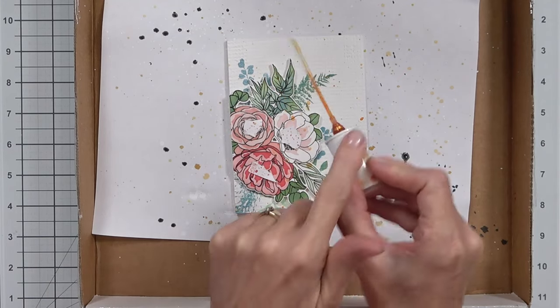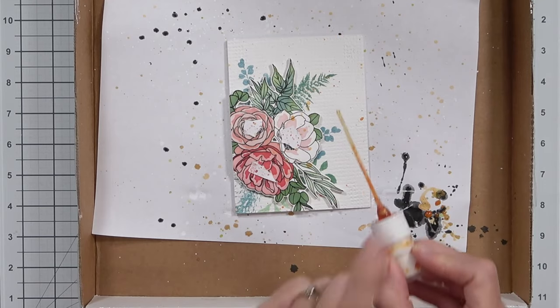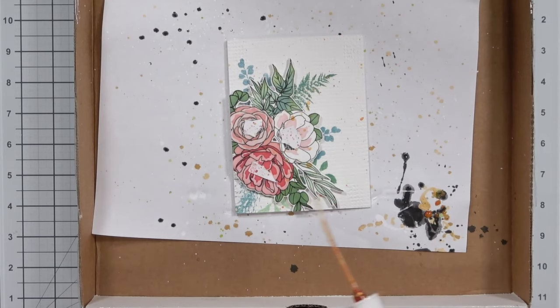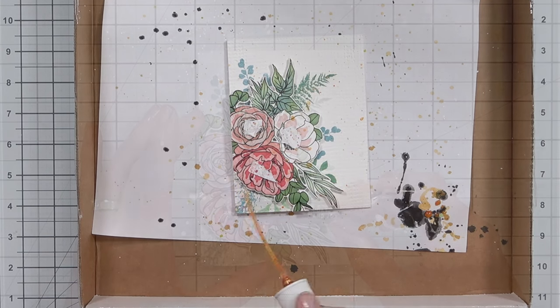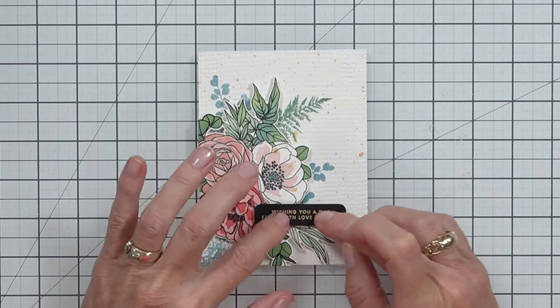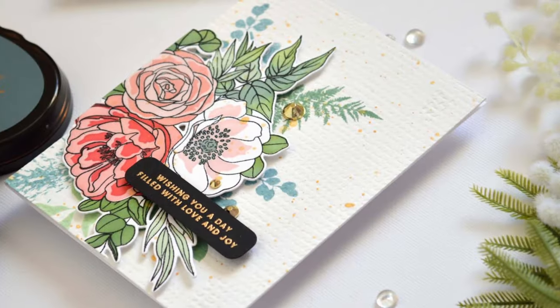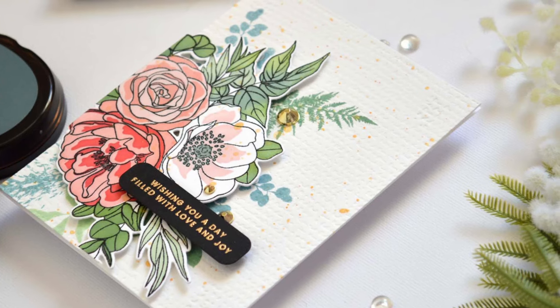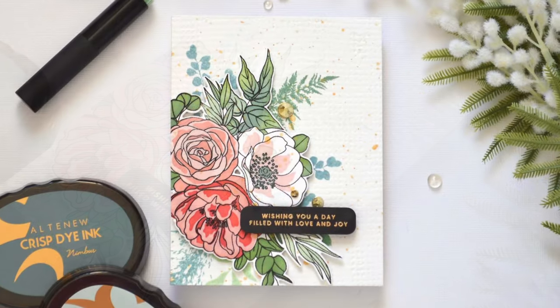And I really like this antique gold ink spray from Altenew, so that won today. I did add the sentiment after I'd done the splatter because it's much easier that way and protected the center of the flowers as well. Blind letterpress is such a subtle fun way to add something special to your projects.